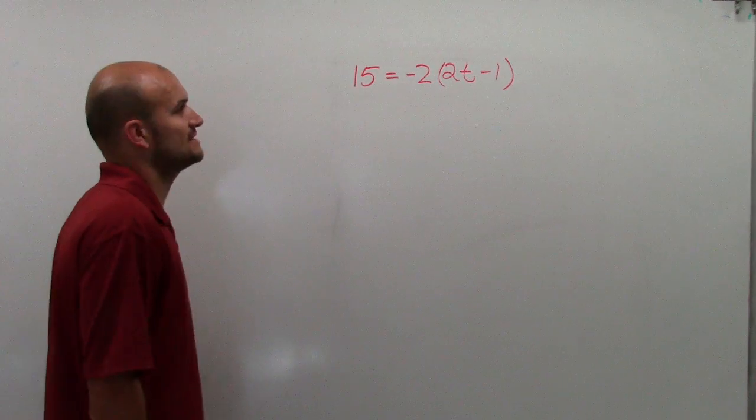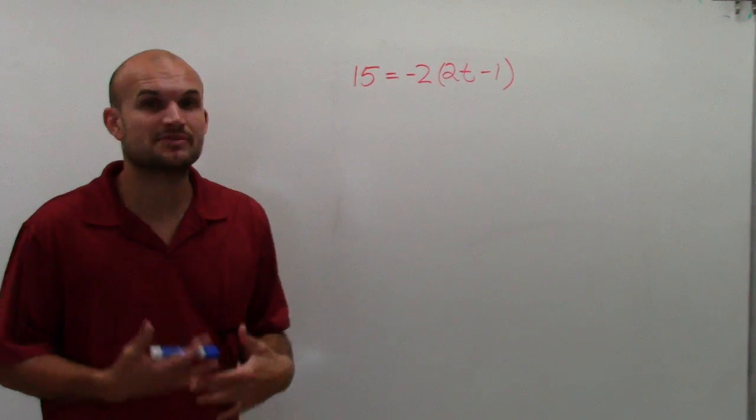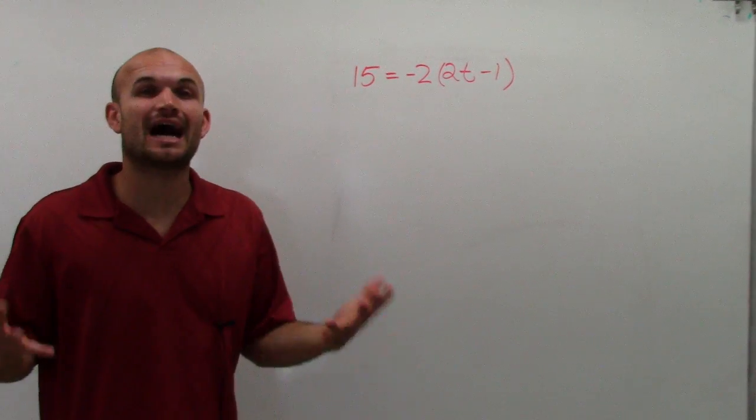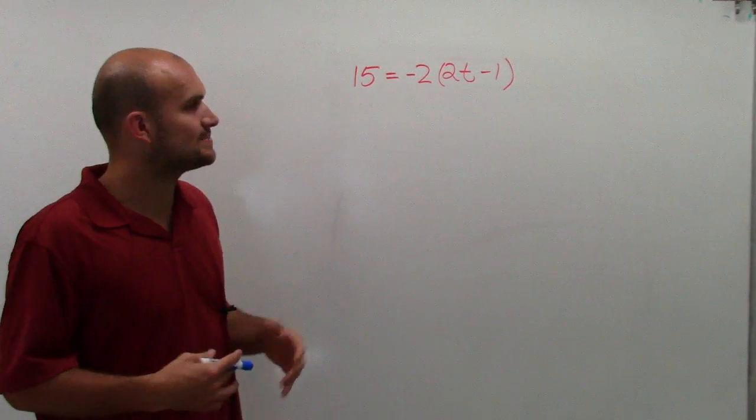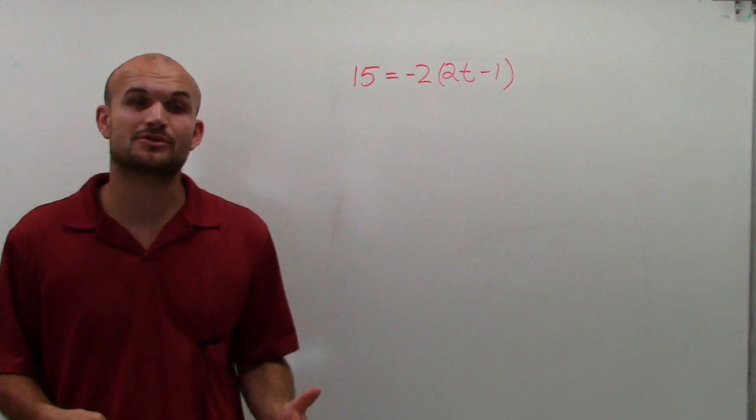So 15 equals negative 2 times 2t minus 1. So what we need to do is we need to find the value of t, meaning I need to isolate the variable. So there's a couple ways we need to look at this. Remember, we need to undo the operations that are happening to our variable.